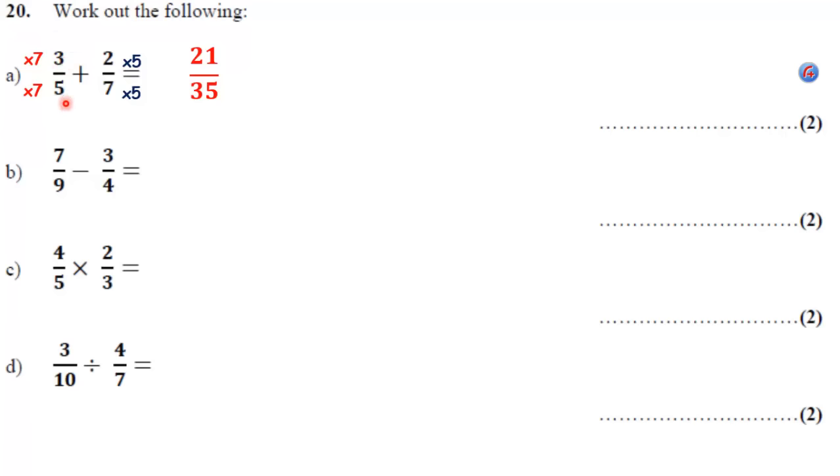So the first fraction, if I multiply it by 7, 3 times 7 is 21, 5 times 7 is 35. Plus multiply the second fraction, top and bottom by 5, so I'll get 10 over 35. So I have 21 thirty-fifths plus 10 thirty-fifths. How many thirty-fifths is that? 21 plus 10 is 31 thirty-fifths.